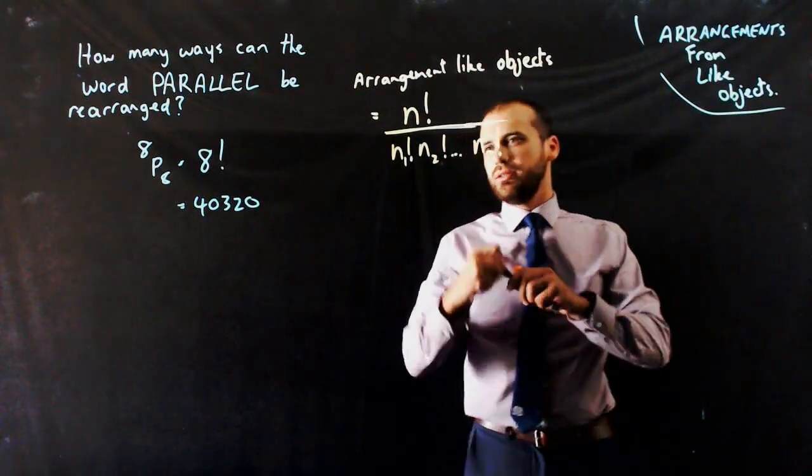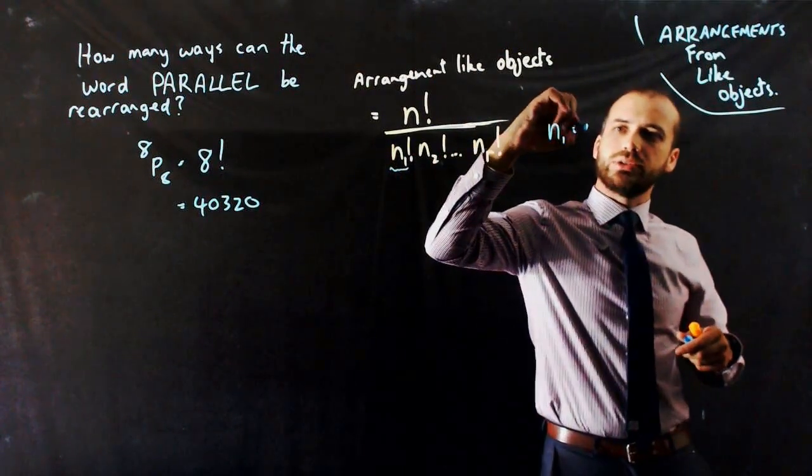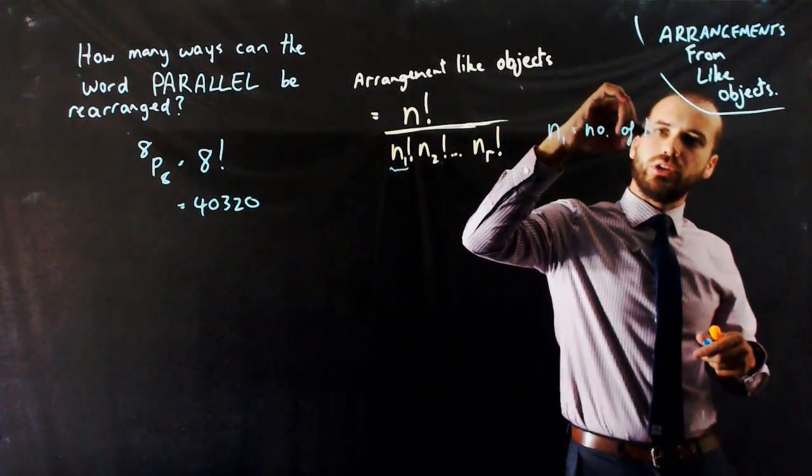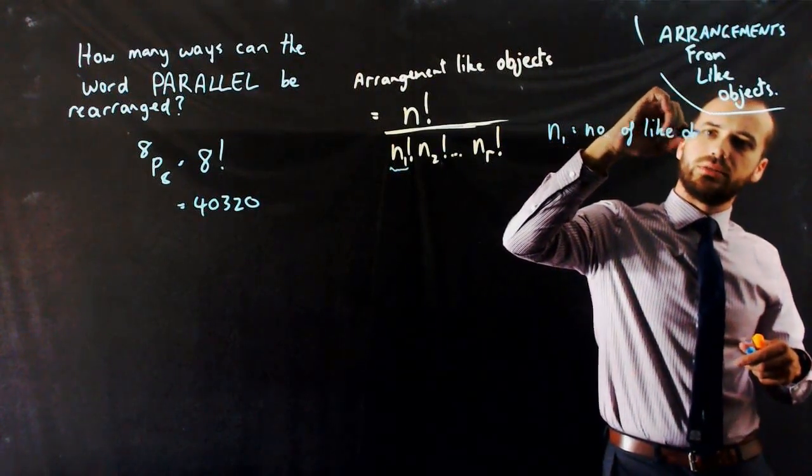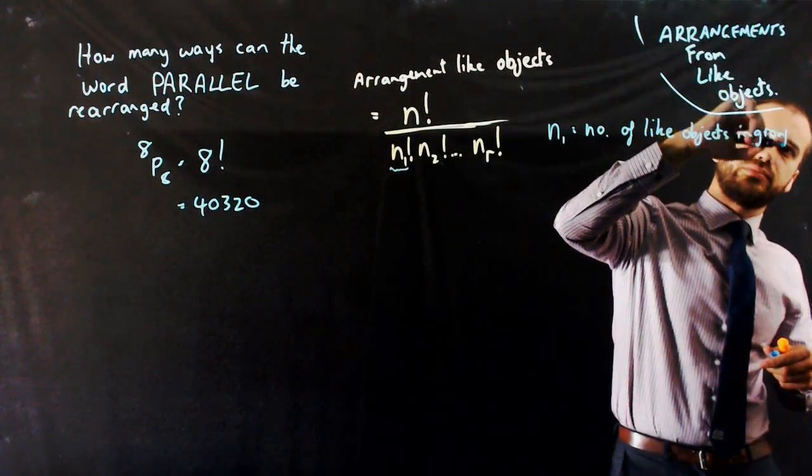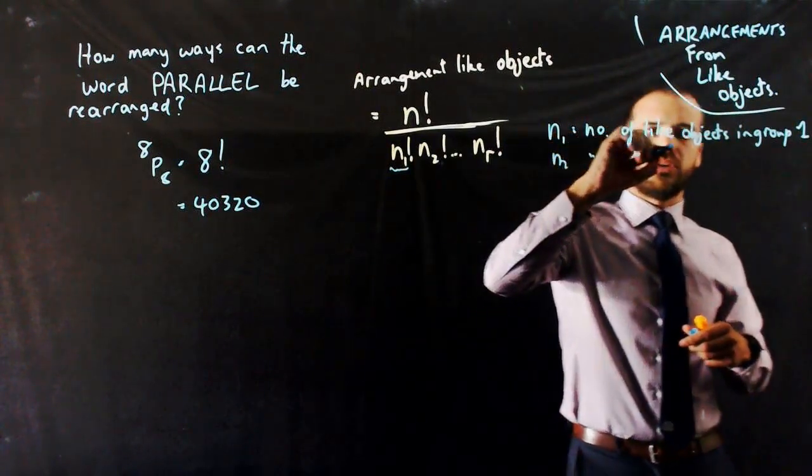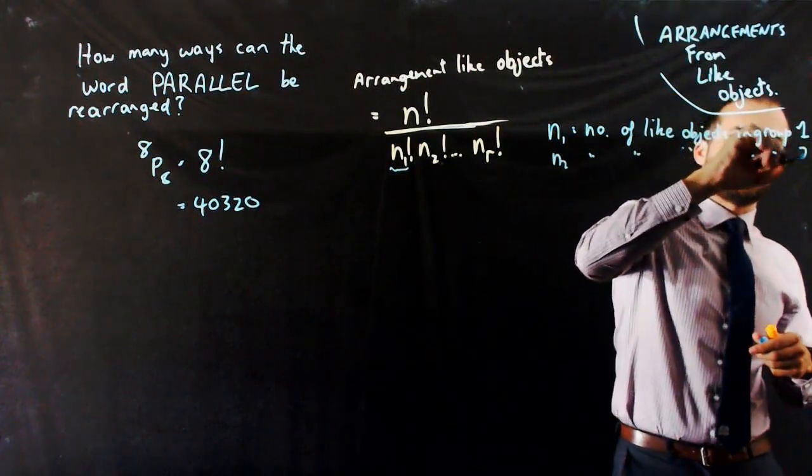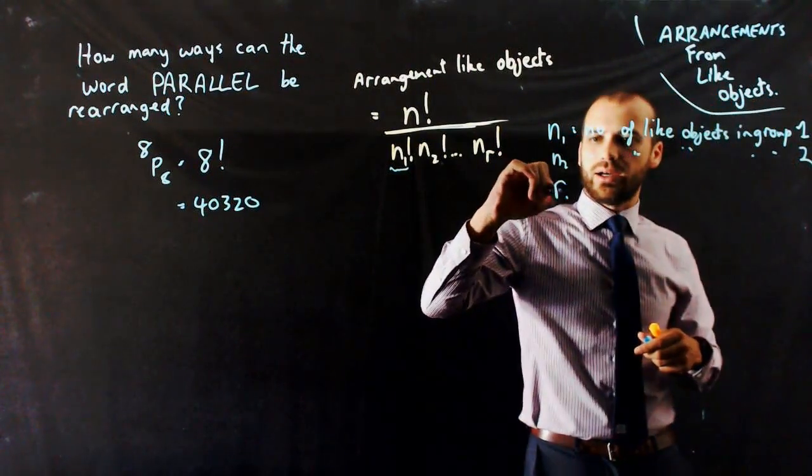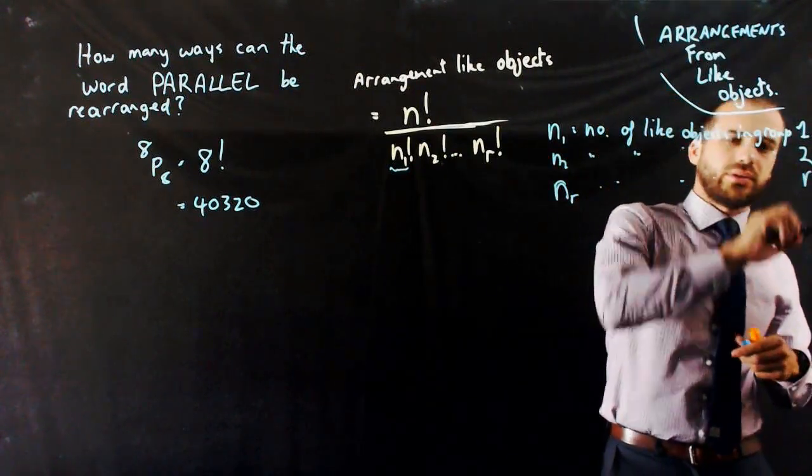Now, N1 equals the number of like objects in group 1. N2 is the number of like objects in group 2. Nr obviously is the number in group R.